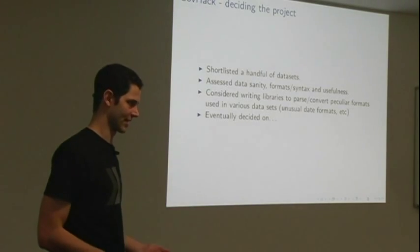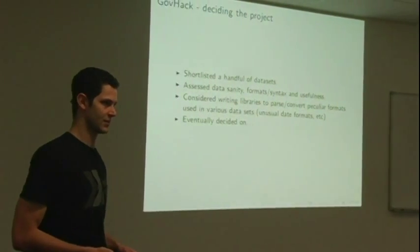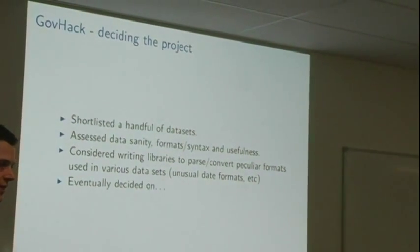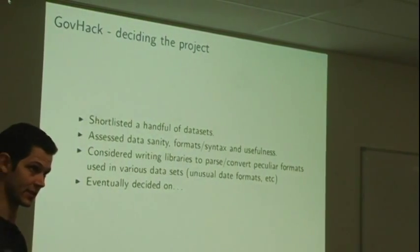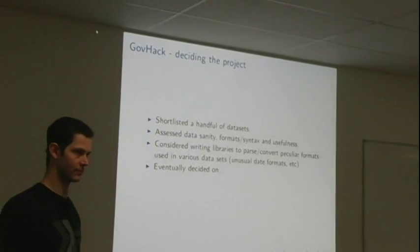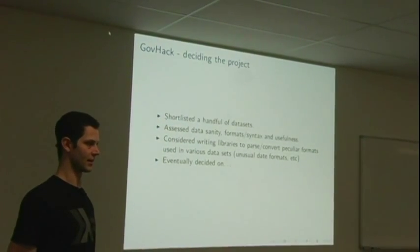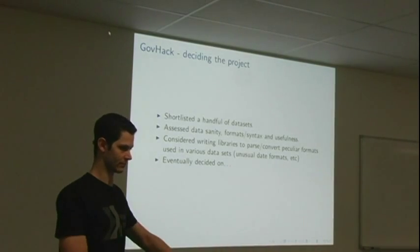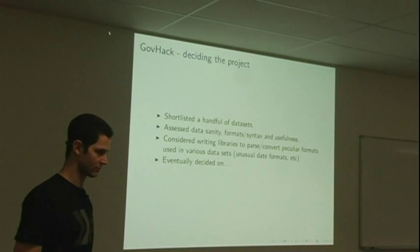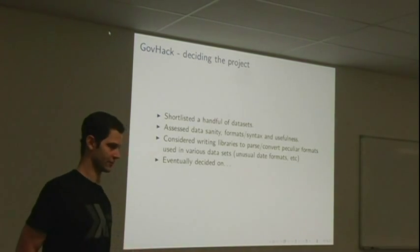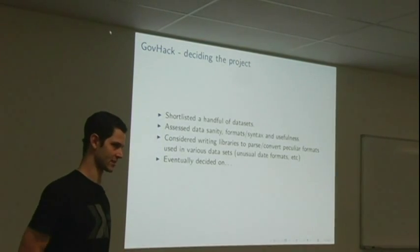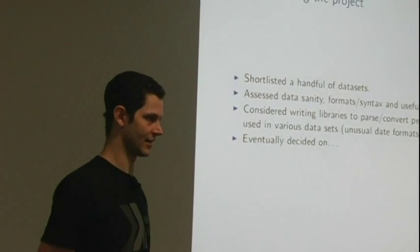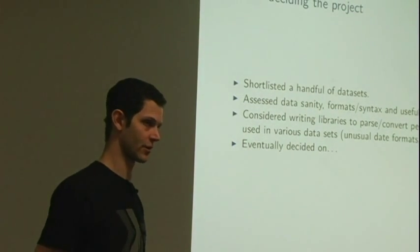So what was the process of GovHack? The first night was spent deciding what we were going to do for the project. We started by looking at the data sets that had been made available, picking out a few interesting ones. We then had a more in-depth look at some of those shortlisted data sets to see, is the data actually going to be useful? What's the quality of the data? How clean is it? How sane? How easy is it going to be to parse that data into objects that we can work with in the software? We encountered a lot of strange formats, like weird date formats. We thought about just writing libraries for parsing these formats and releasing those libraries as our GovHack project.